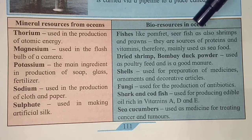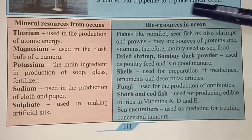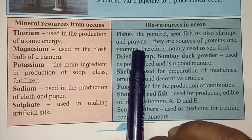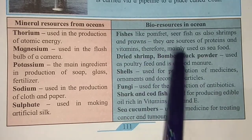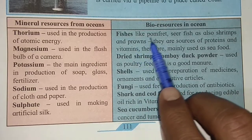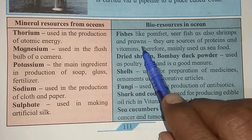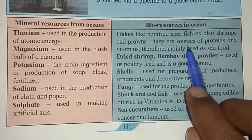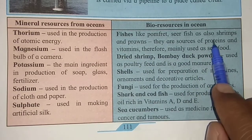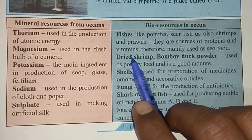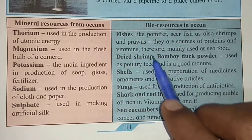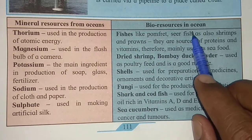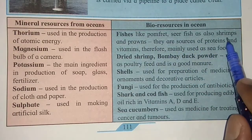Moving to bio resources in the ocean — bio means living. Living resources include fishes like pomfret, seerfish, as also shrimps and prawns. These are very expensive in the market — near about 1000 rupees per kilo. They are sources of proteins and vitamins, which is why they are consumed and priced highly. They are mainly used as seafood. Some examples to remember: pomfret, prawn, and seerfish.